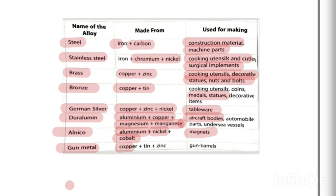The last alloy is gun metal, which is a mixture of copper, tin, and zinc, used to make gun barrels. This covers all the uses of alloys. I hope you have enjoyed the video and understood the uses of metals, non-metals, alloys, and noble metals. Thank you for watching, students.